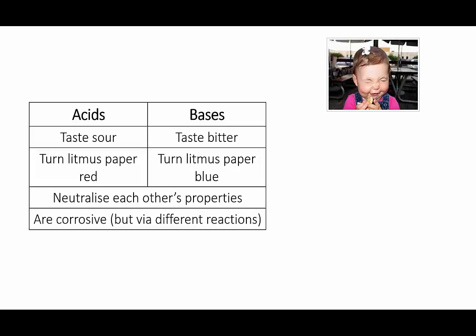In contrast, bases taste bitter. Acids turn litmus paper red, whereas bases turn it blue. Litmus is a natural dye that's derived from a lichen, and it acts as an acid-base indicator. Other indicators will also show a color change between acids and bases.